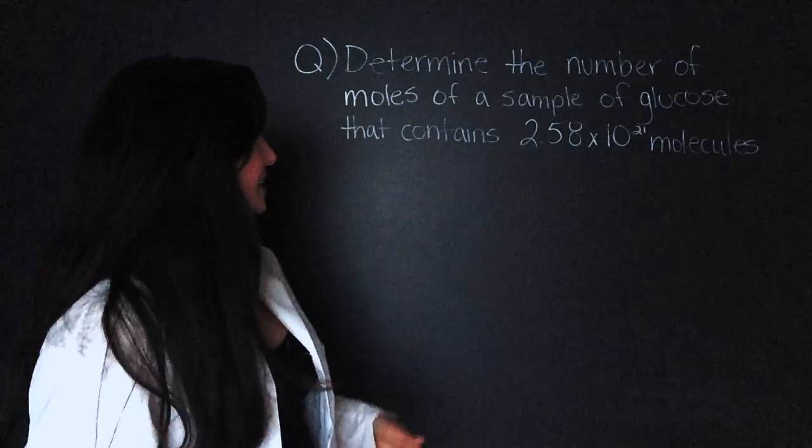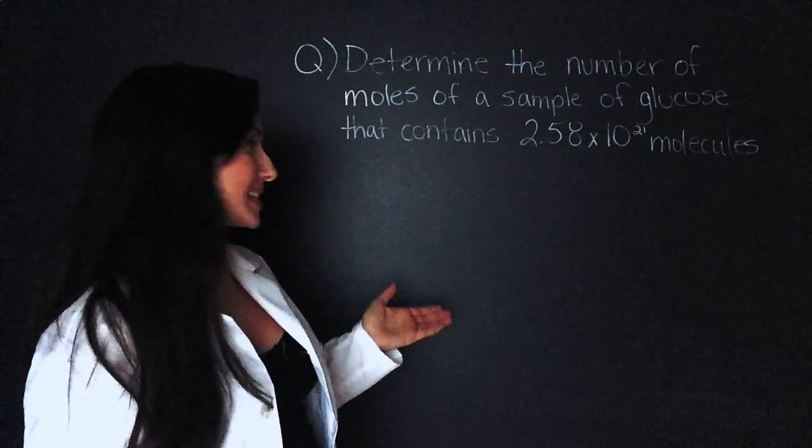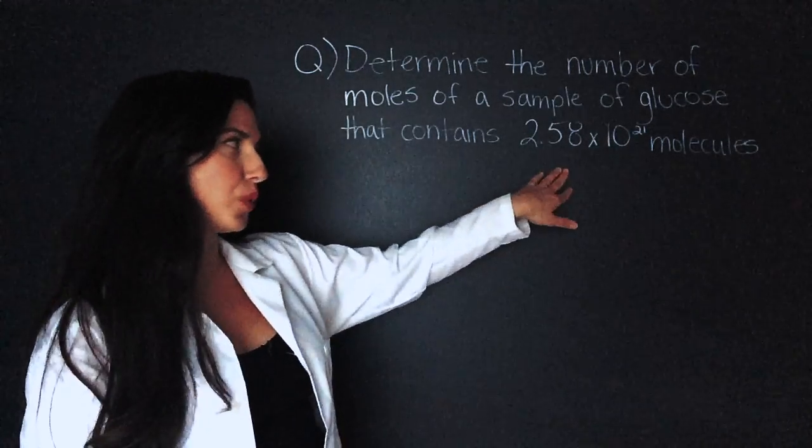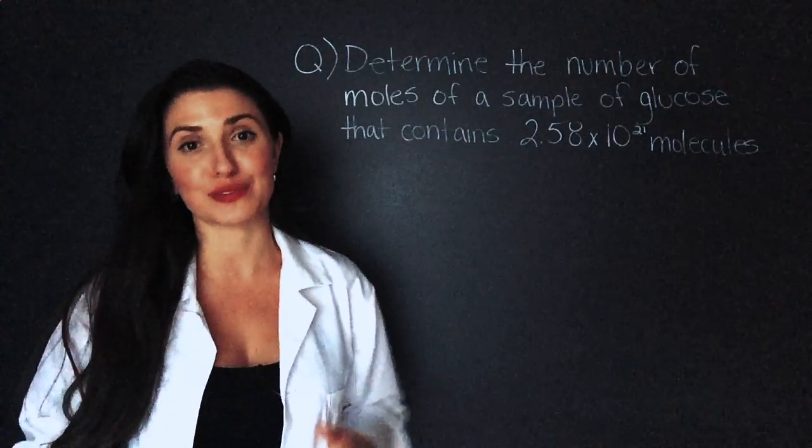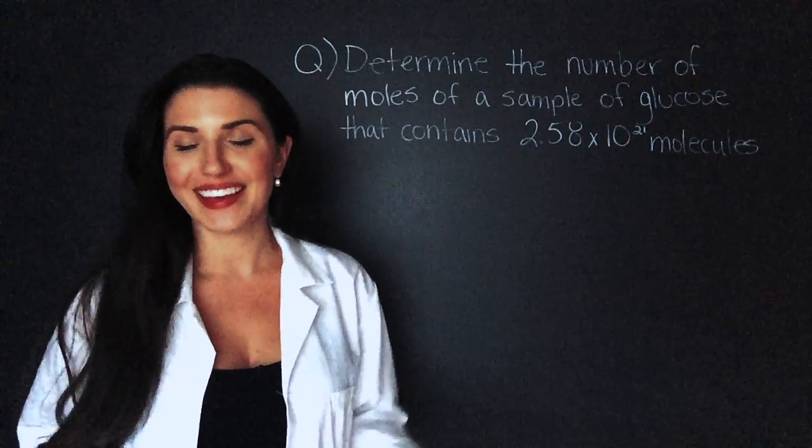So our first question reads, determine the number of moles of a sample of glucose that contains 2.58 times 10 to the power of 21 molecules. This is simple.